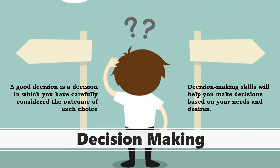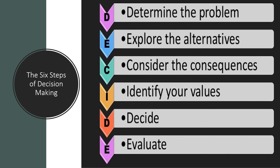A decision is a choice you make or act upon. A good decision is one in which you have carefully considered the outcome of each choice. To accept personal responsibility is to accept how your decisions may affect you and other people. Decision-making skills will help you make decisions based on your needs and desires, and at the same time, help you resist peer pressure. Decision-making must be practiced in resolving issues and concerns about sexuality. We have six steps of decision-making: determine the problem, explore the alternatives, consider the consequences, identify your values, then decide and evaluate your decisions.